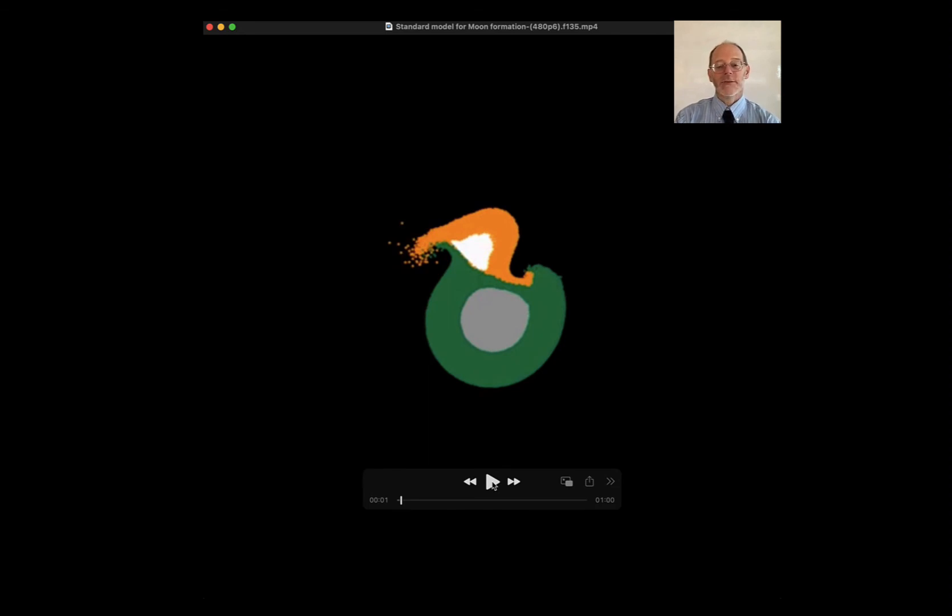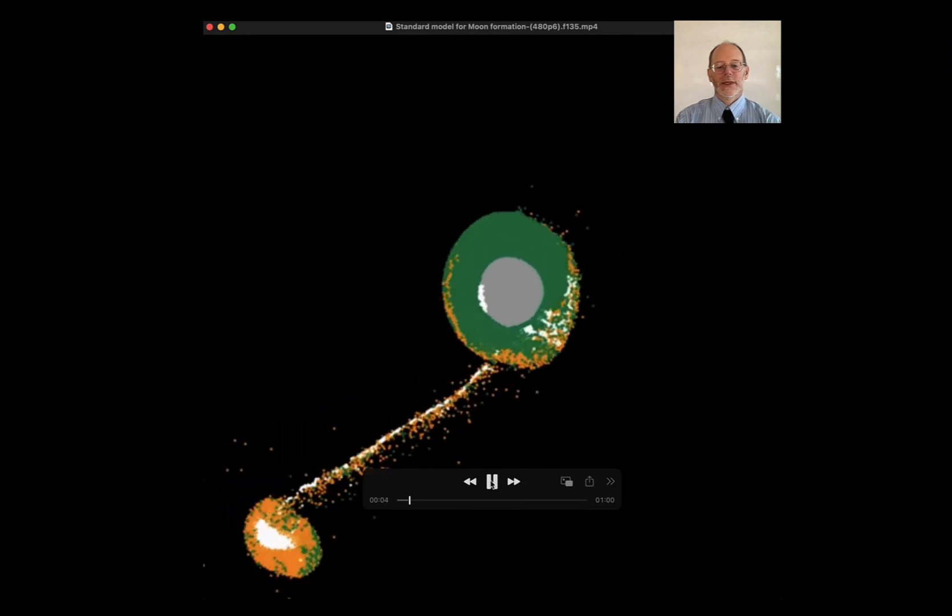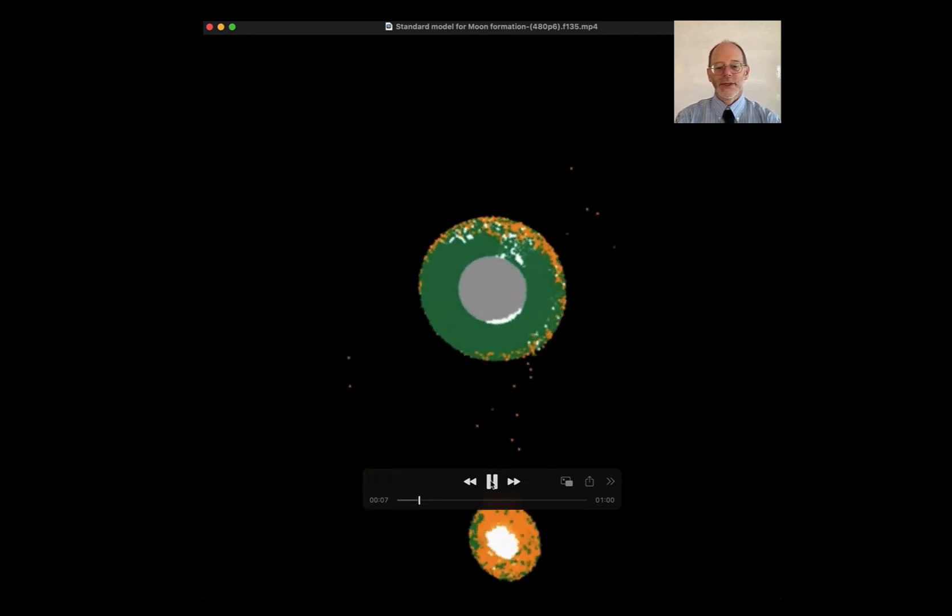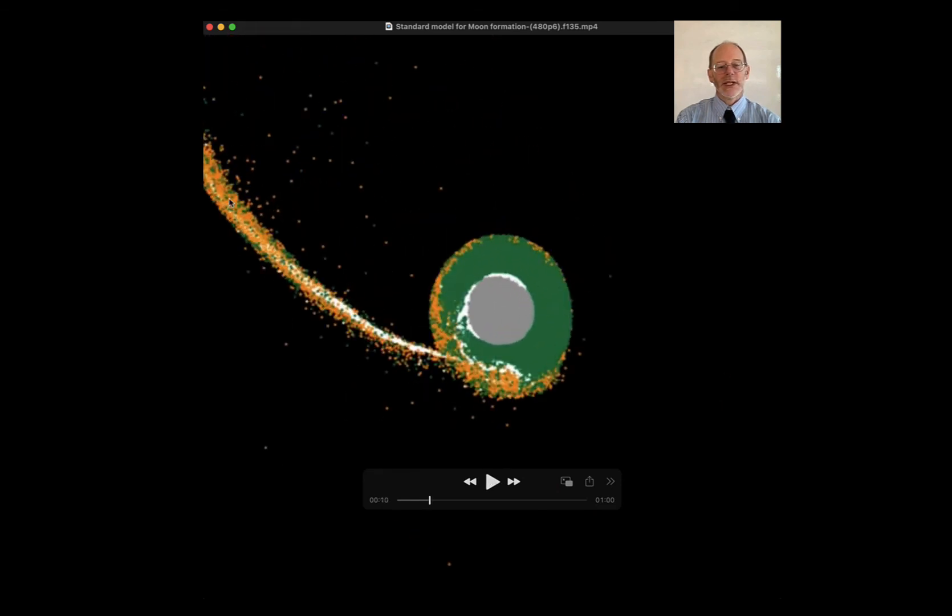So we know there has to be some angular momentum imposed on this. And take a look at this. So now the Mars size impactor is being drawn out into a jet. It still has a little bit of a core here. And this is going to reform and come back and re-impact the Earth. And as it impacts, it gets pulled out into an even longer jet.